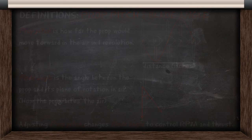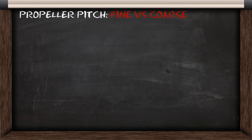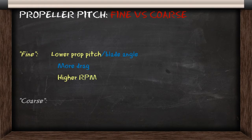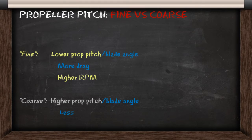So how do we define the values of prop pitch? Prop pitch is the gradient between fine and coarse. A fine setting will have lower prop pitch, more drag, but a higher RPM. And a coarse setting will have higher prop pitch, less drag, and a lower RPM.